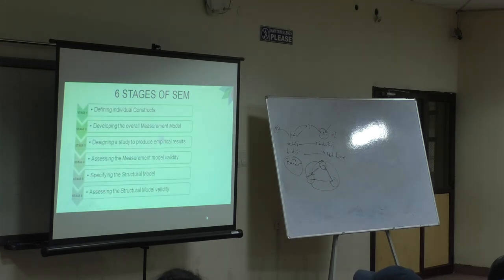Six stages of how you conduct your research. Defining individual constructs. Individual constructs were perceived quality and customer expectation. First, we need to define them. That is my first stage. Then I need to develop a measurement model. There were three measurement models in the diagram that we just now saw. Your measurement model will be developed based on the theory that you have, the literature review that you do.